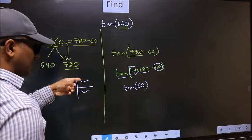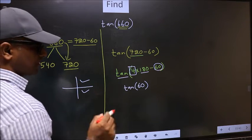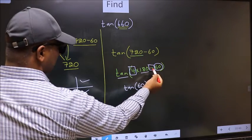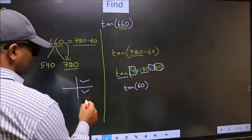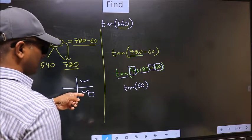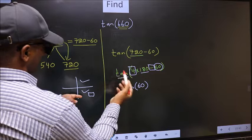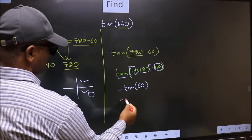So, now to select the quadrant, we should look at this symbol. Here we have negative. That means, angle lies in the fourth quadrant. And in the fourth quadrant, tan is negative. So, we should put negative.